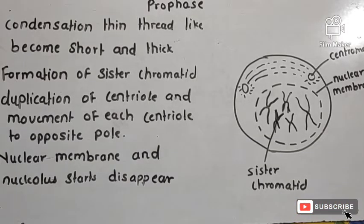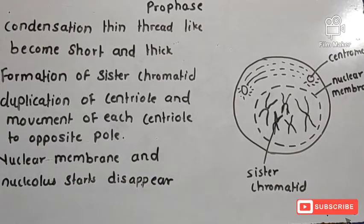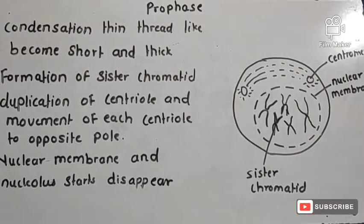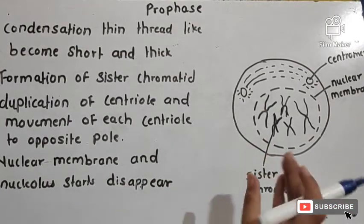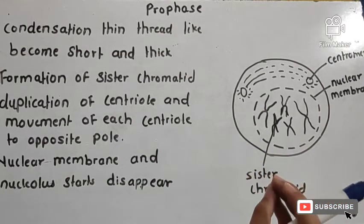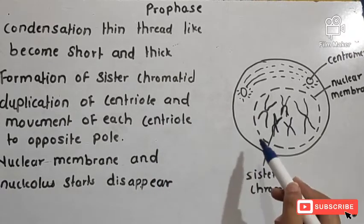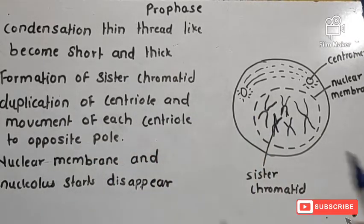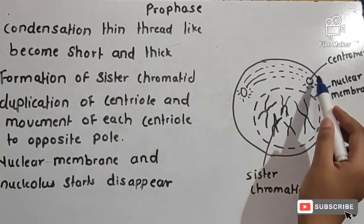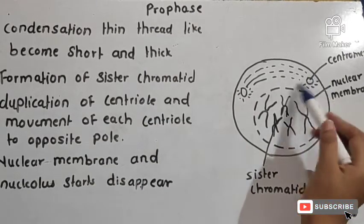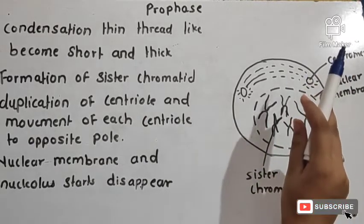The first step is prophase. In prophase, condensation occurs — the thin thread-like chromosome becomes short and thick. Sister chromatids are formed. There is duplication of the centriole, and the centrioles move to opposite poles. Each centriole duplicates, resulting in two parts moving to each respective pole.